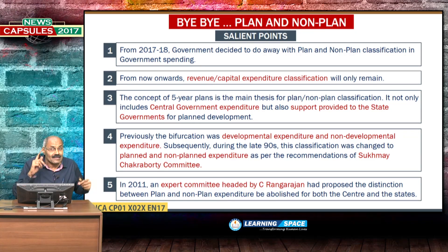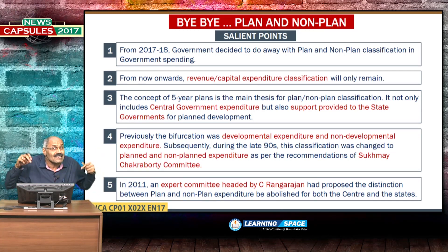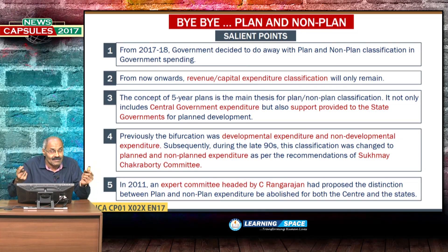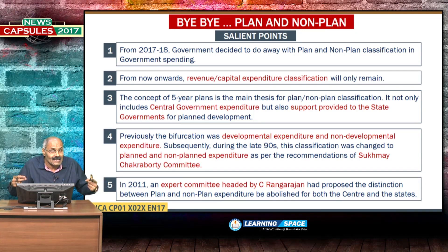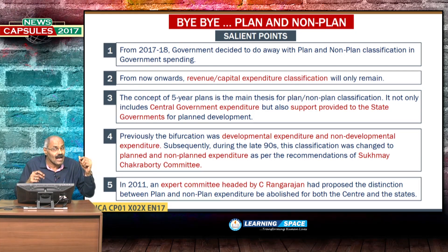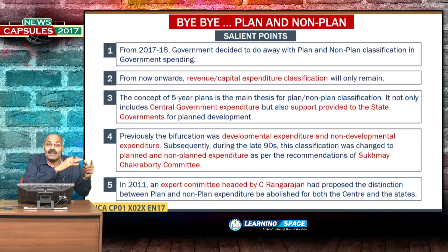The second important aspect — across the world, everyone is interested in capital expenditure as well as revenue expenditure. This classification of capital and revenue expenditure is in vogue in several countries, and multilateral lenders are also interested in capital and revenue. If you look at the World Bank as well as the IMF, they are very much interested in the capital part of a country's expenditure because capital expenditure creates assets.